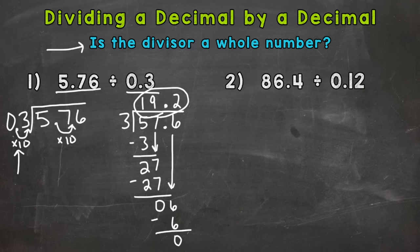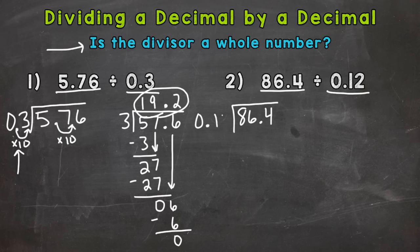Let's do another example to get this down a little better — and number two is going to be a little different. Our dividend is 86 and four tenths, which goes underneath the division bar. Divided by 12 hundredths, which is our divisor on the outside. Is the divisor a whole number? No.